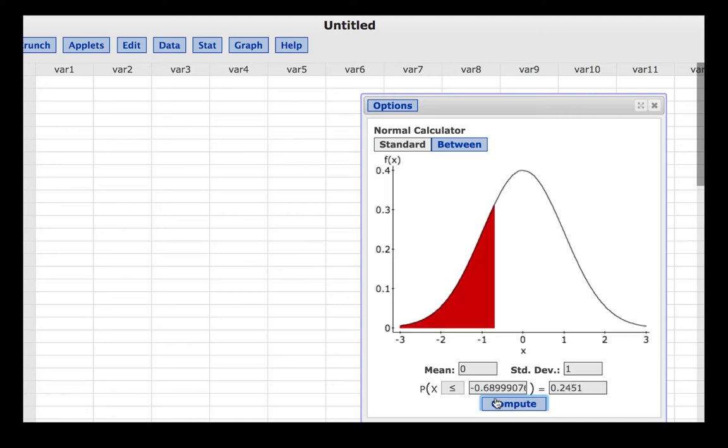Click compute and this gives us a z-score of negative 0.68999 or if we go to four decimal places, negative 0.6900.